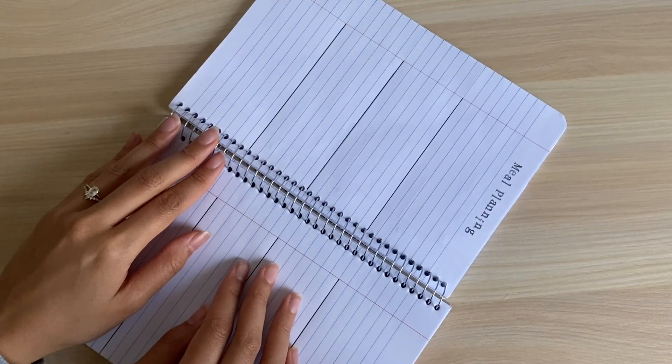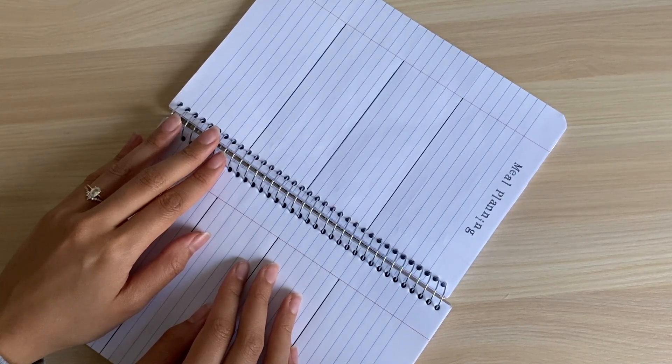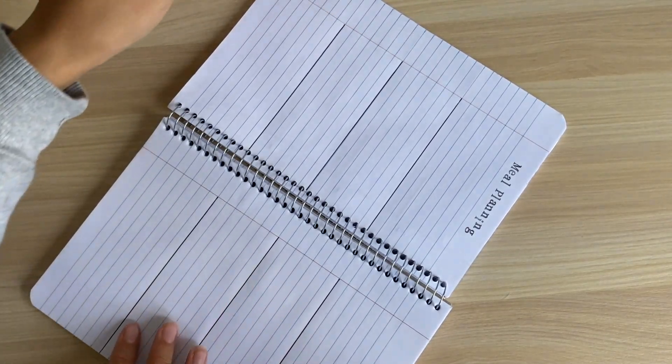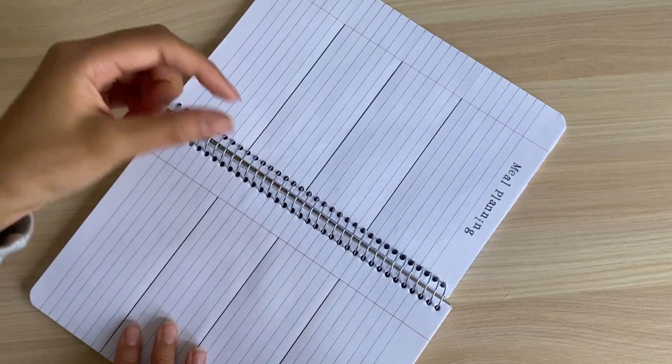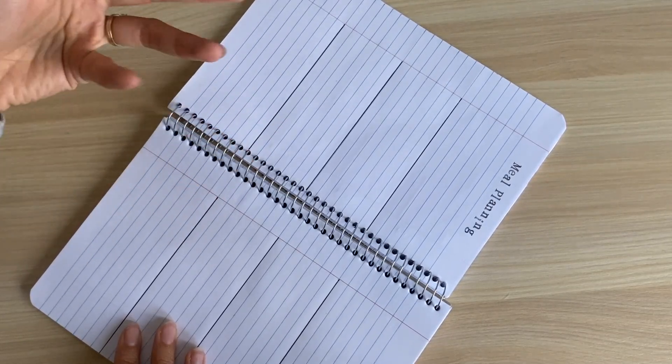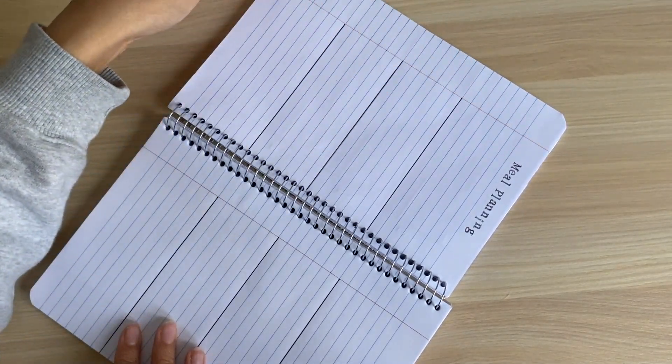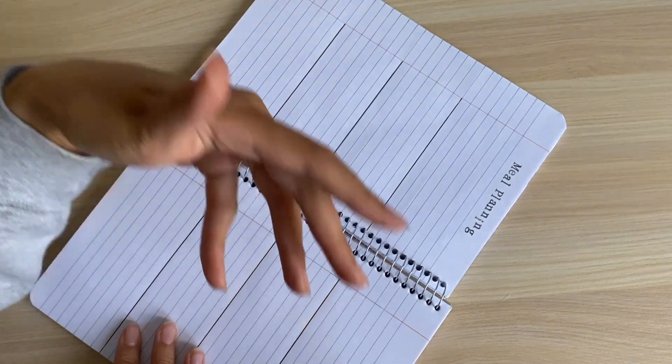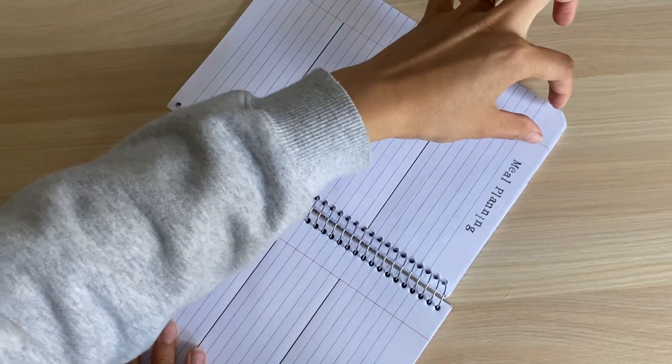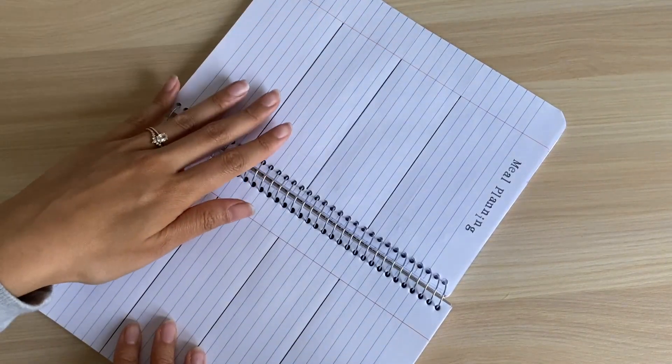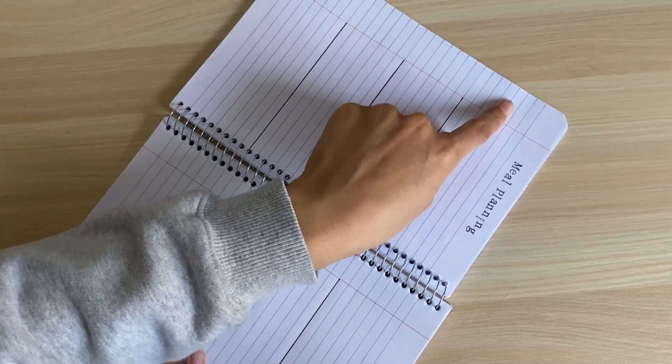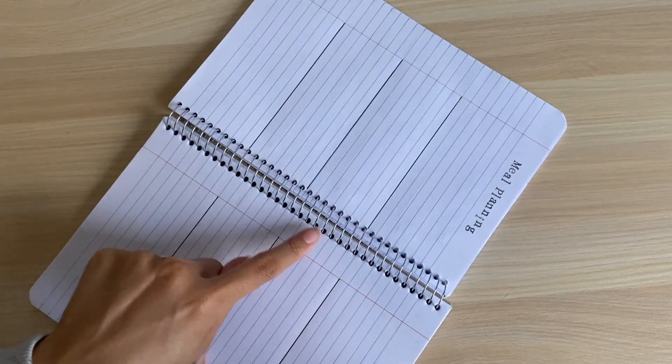Let's start off with the header. I'm going to stamp out 'meal planning.' Next, I will stamp out headers for each section. I will be taking advantage of this side margin that this notebook has. I know that most, if not at least some, lined notebooks have this side margin. This is where I will be stamping out the headers. I will first start off right here taking this first section as my grocery list section, and then I will do Sunday, Monday, Tuesday, Wednesday, Thursday, Friday, Saturday.